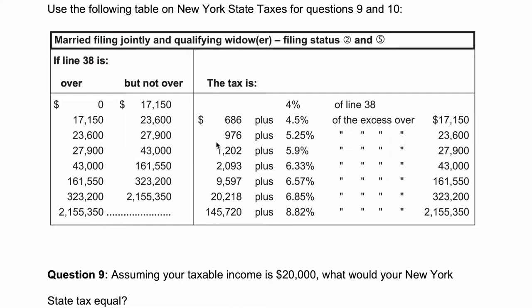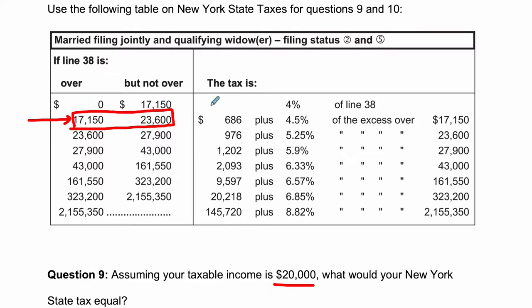So what are we doing here? Well, assuming the taxable income is $20,000 — so the income you're going to be taxed on is $20,000 — what would your New York State tax equal? We're looking at how to read this table. If you take $20,000 and go to your table, it falls in this bracket: if line 38 is over $17,150 but not over $23,600 — between those two numbers — the tax is $686.